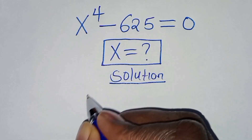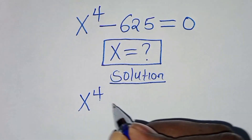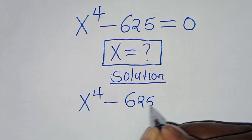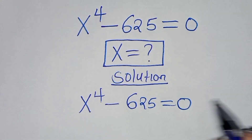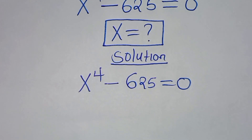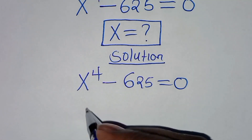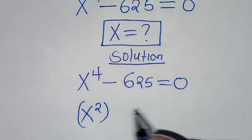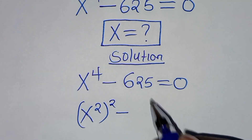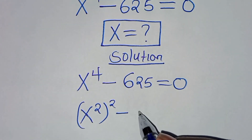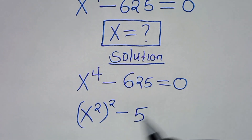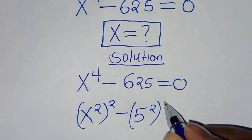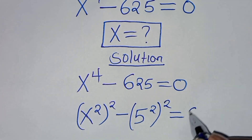So, we have x to the power 4 subtract 625, this is equal to 0. Now, we can express x to the power 4 as x to the power 2, raised to the power 2, then subtract 625. We can express this as 5 to the power 2, raised to the power 2, this is equal to 0.